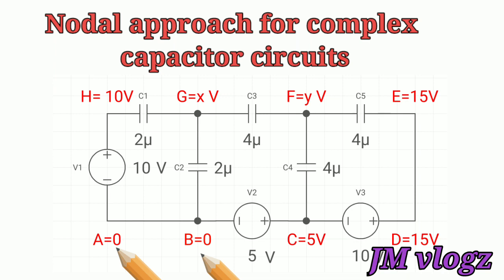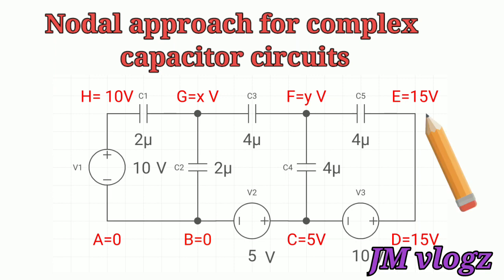Next, we fix the value of node C. There is a 5 volt battery connected, and since B is 0, node C is 5 volt more than B, so C equals 5 volt. Node D is 5 plus 10 volt, which equals 15 volt. Since there is no cell between D and E, the voltage of D equals that of E, so E is also 15 volt. There is a 10 volt cell between A and H, so node H is fixed at 10 volt.